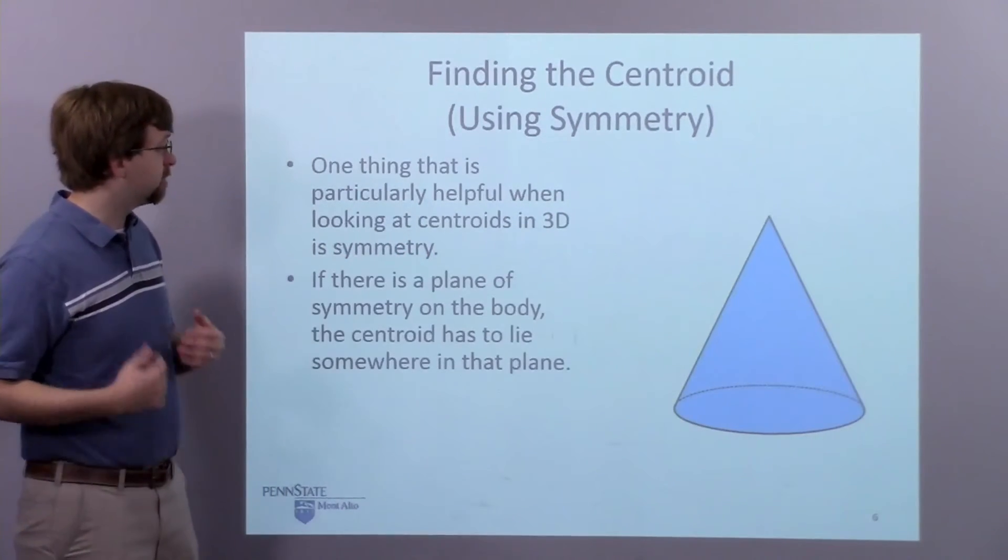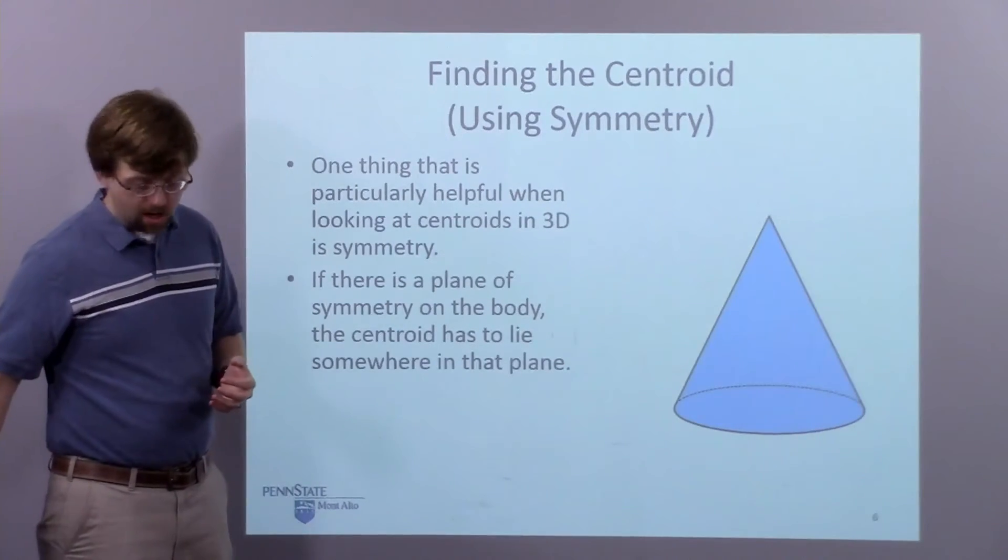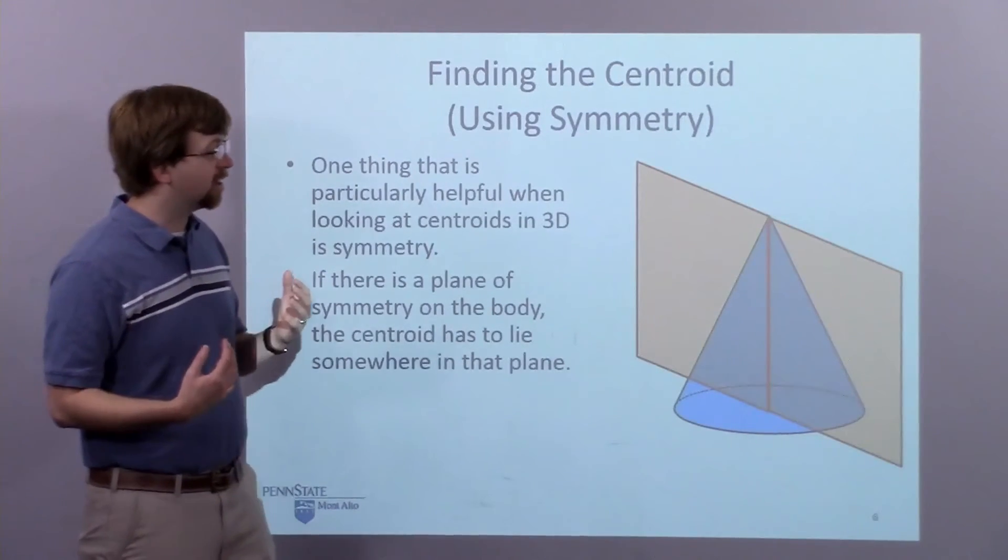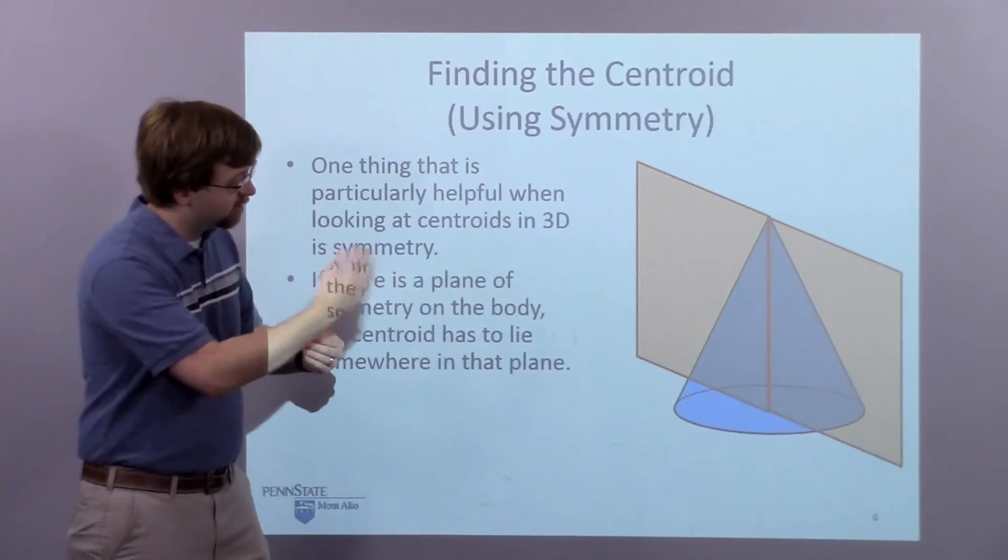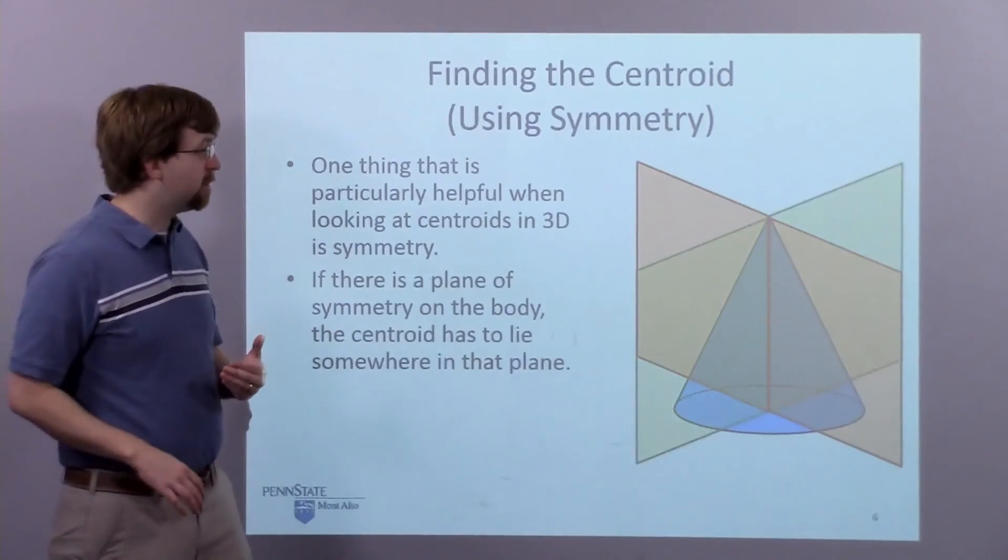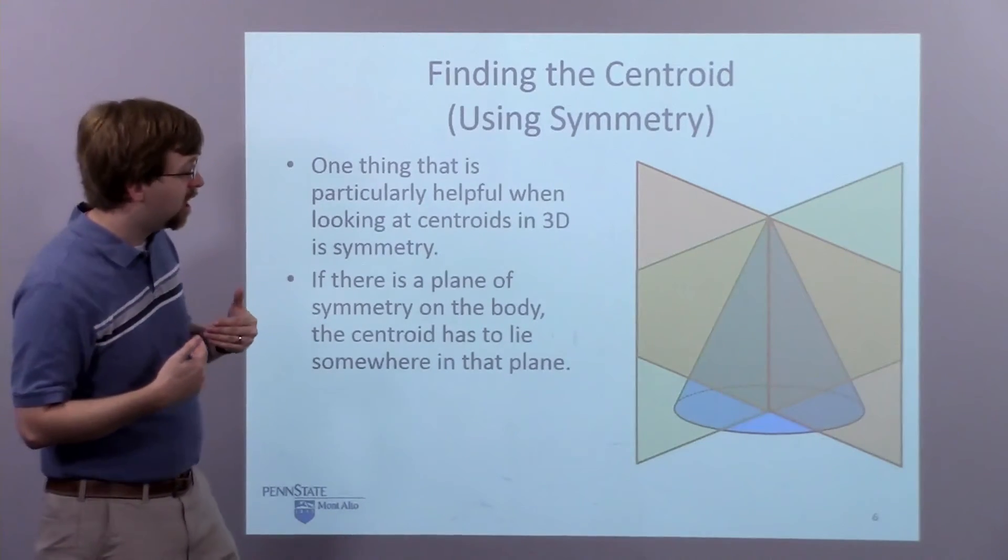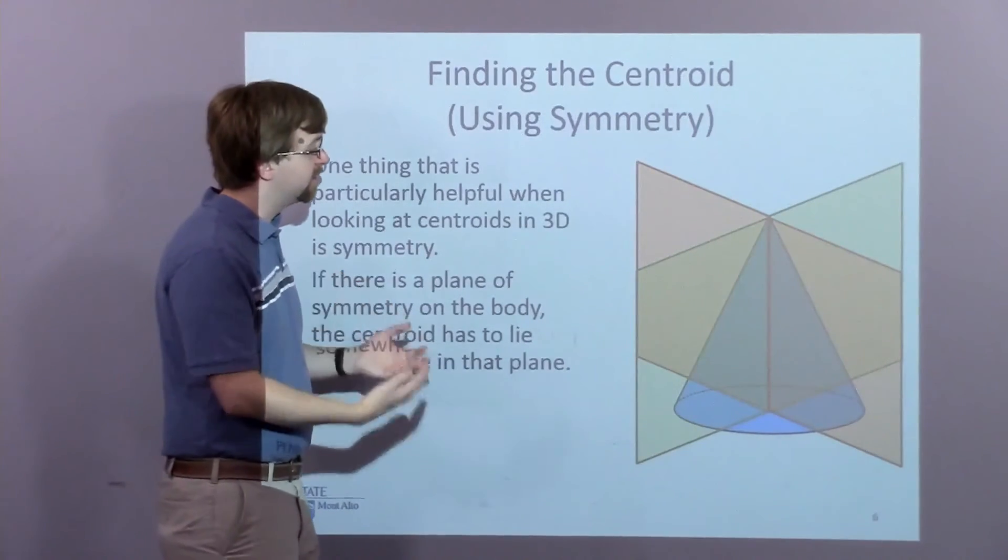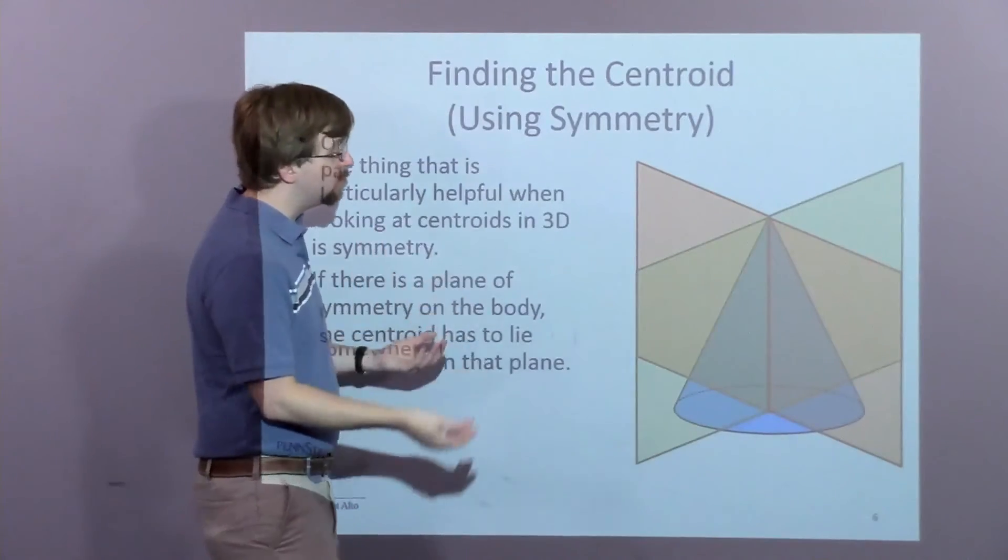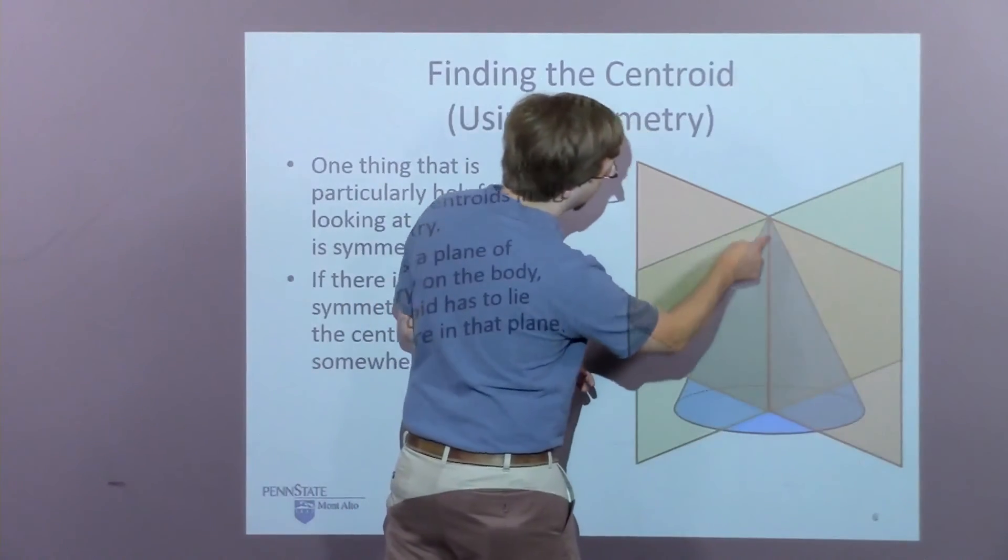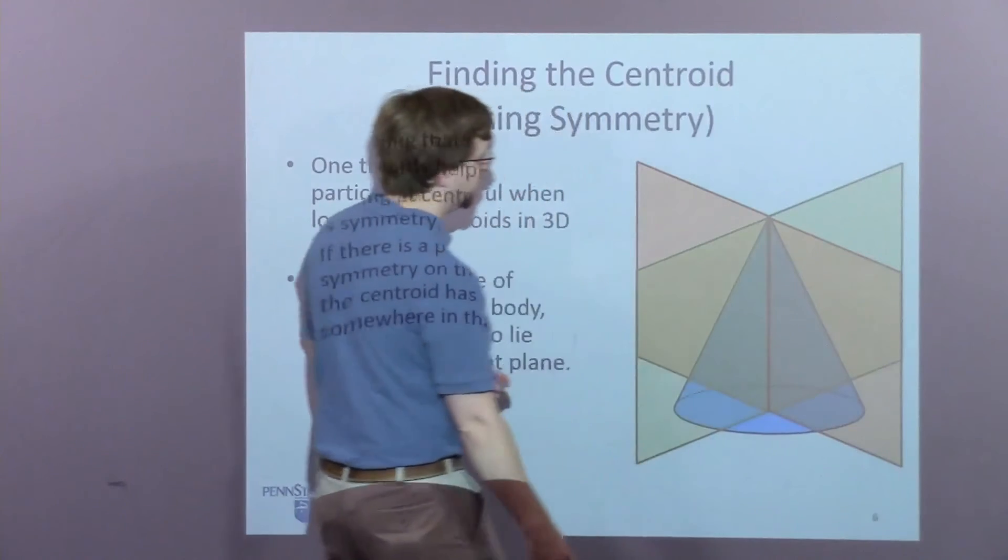If I have any sort of plane of symmetry, the centroid is going to have to lie in that plane. So like I said, left and right, front and back, both of those are planes of symmetry, and so that plane of symmetry contains my centroid. Since I have two of them, I know that the centroid lies somewhere along this central line here.